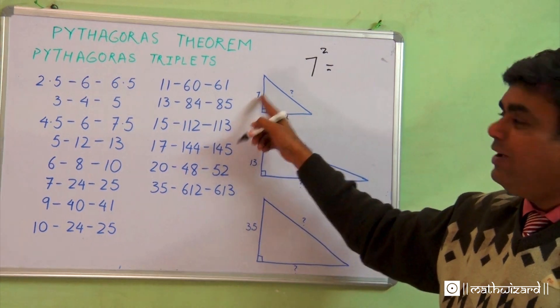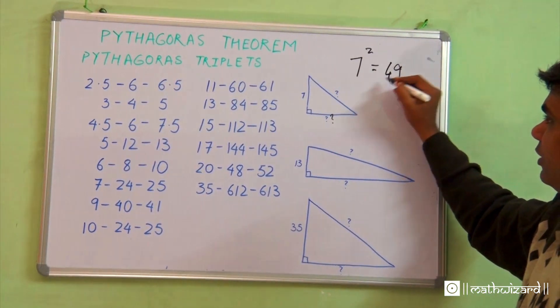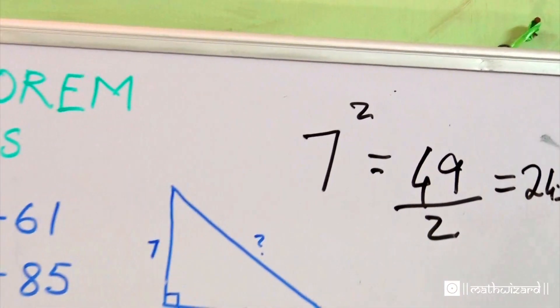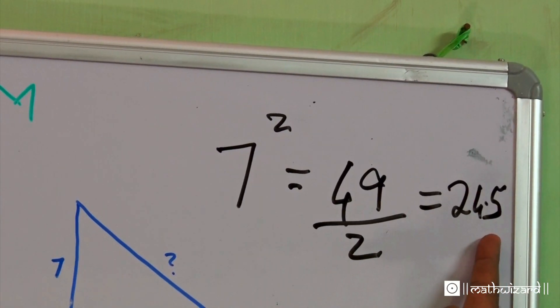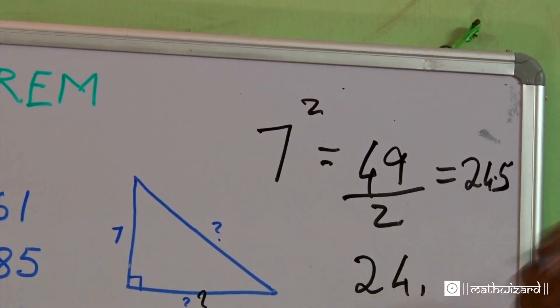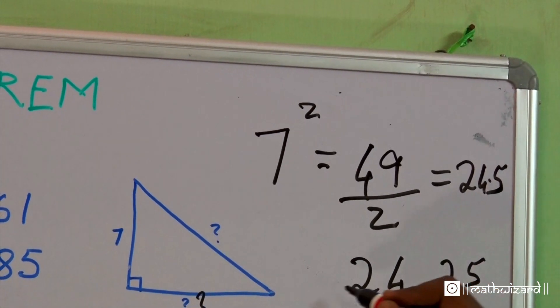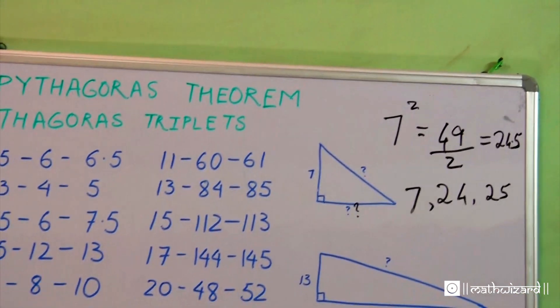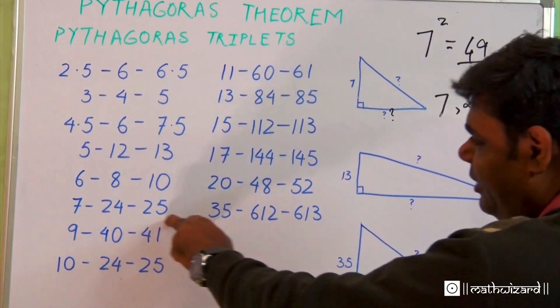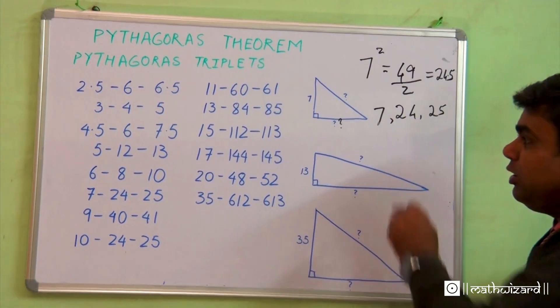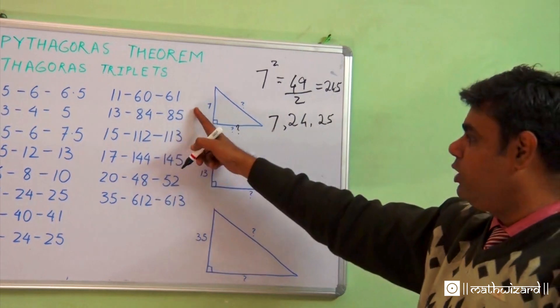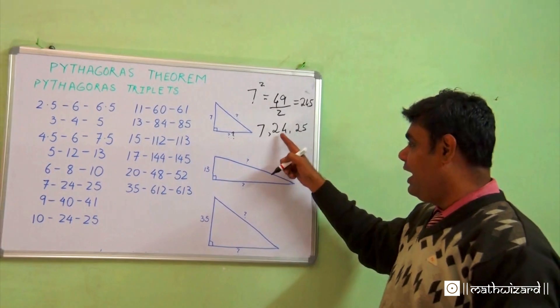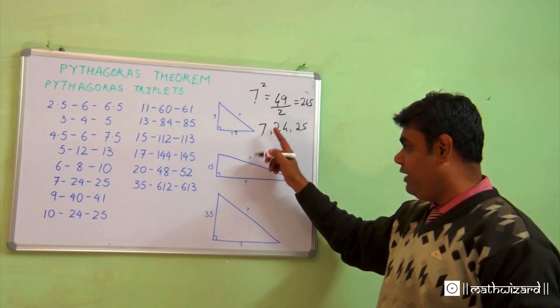What is 7 square? It gives me 49. Simply half it, it gives 24.5. Just round off this number, I'll get 24, and my next whole number is 25. So what are my triplets? 7, 24, 25. If I look this side, there is one triplet of the same value. 7 square is 49, the half of which is 24.5. I round it off, it's 24, 25.